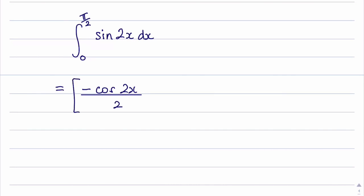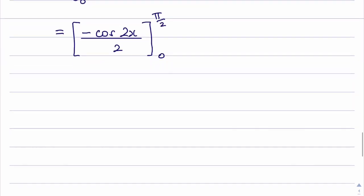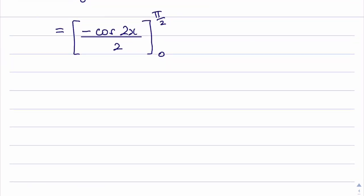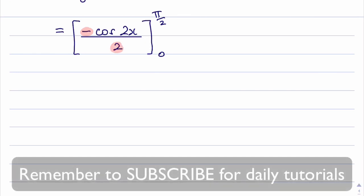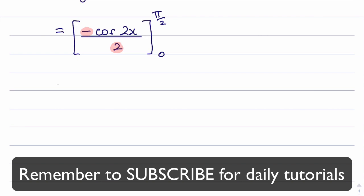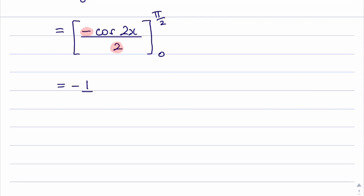We place that in brackets with the limits of π/2 and 0. Now, I can see I've got a negative here—it's actually negative 1—and there's 2 in the denominator, so that's negative 1/2. I can bring that outside the brackets. So negative 1/2, and then we've got cos 2x between π/2 and 0. By bringing that negative 1/2 out, it makes what's in the bracket simpler to work with.